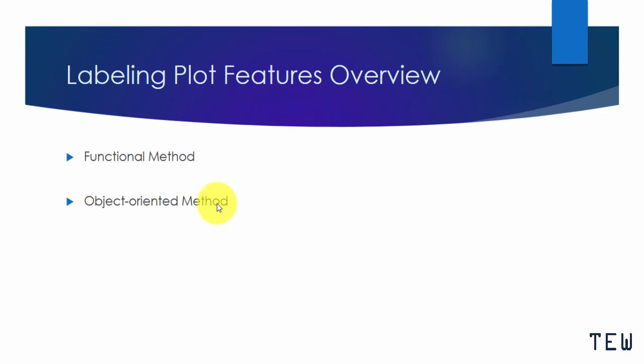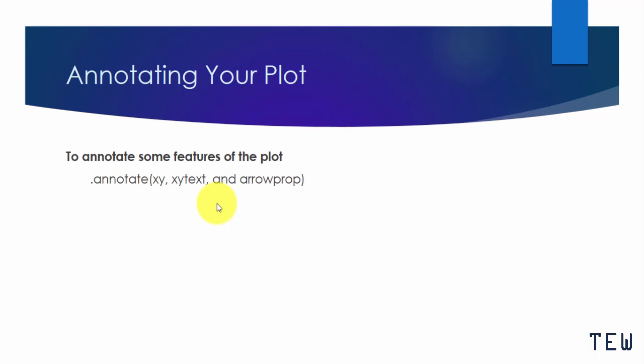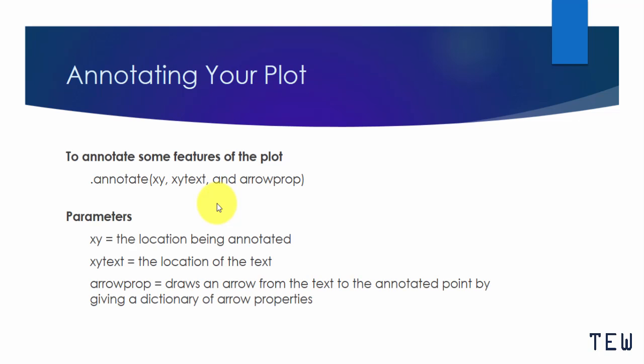There are two methods for labeling and annotating: a functional method and an object-oriented method. I am going to show you both in the demonstration to come. We will use the dot annotate method, and within that we are going to specify the parameters: XY — the location we want to annotate; XY text — the location of where we want the text added; and arrow props — which defines the properties of the arrow we will choose.